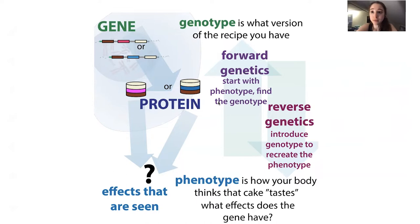With reverse genetics, you're going the other way. So you found that gene — now can you put that gene into mice that are white-haired and see if that causes them to now have brown fur? That would be an example of reverse genetics, where you're introducing the genotype to recreate the phenotype.